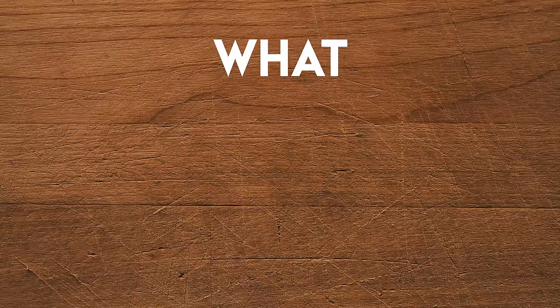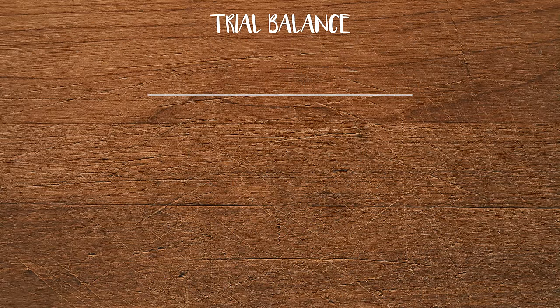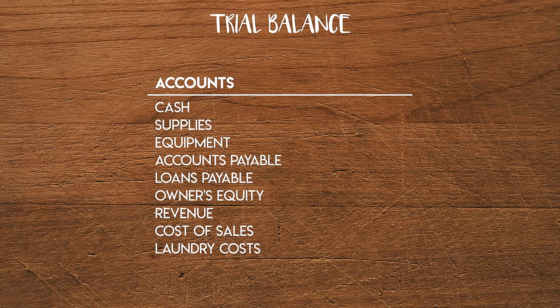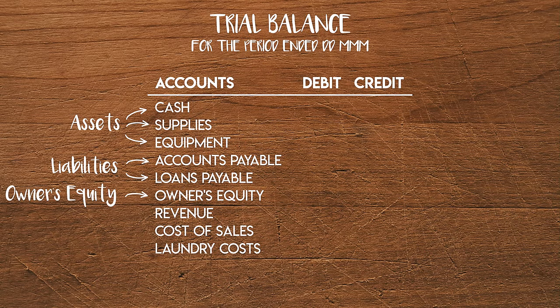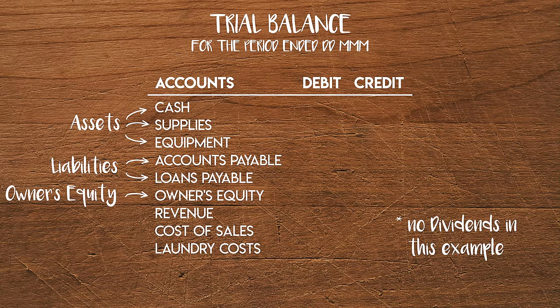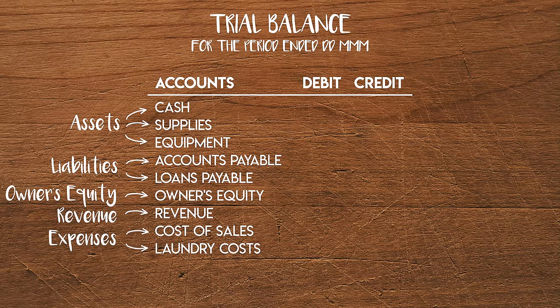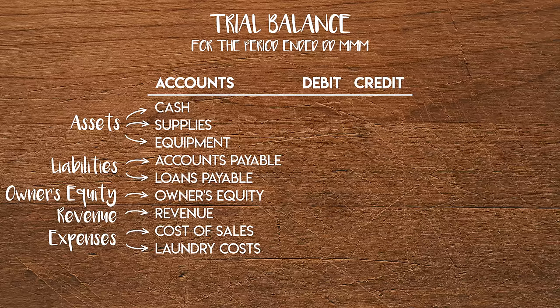Now we know what a trial balance means, but what does it look like? We have a complete listing of all general ledger accounts running down the page with two columns for the debit and credit totals. In the title we need to mention the period end date since we're looking at a snapshot at a point in time. The account names are grouped by their type — typically we start off with assets, liabilities, equity and dividends, since this is the typical layout of a balance sheet. Then we have all of the revenue and expense accounts which make up the income statement or profit and loss. To reduce the size of a trial balance, accounts with zero balances are normally left out completely.